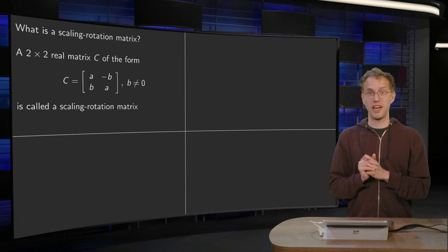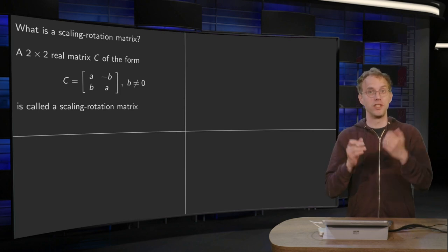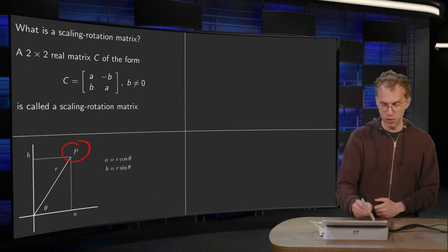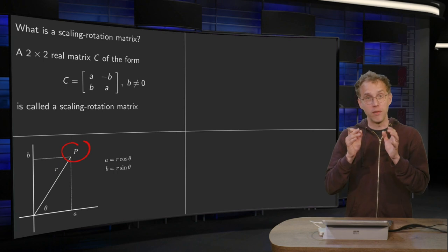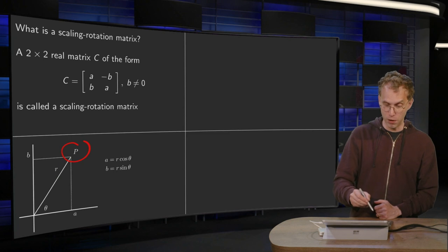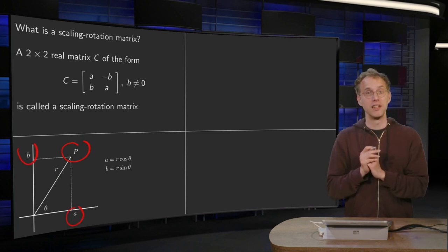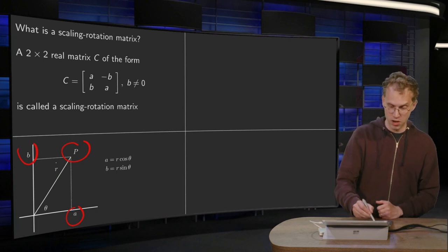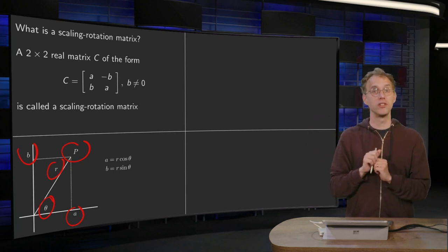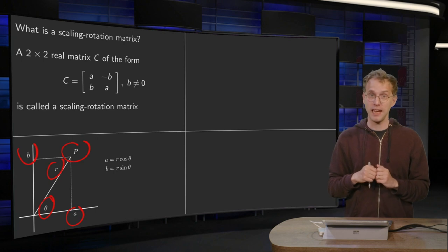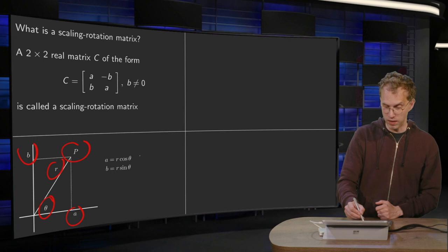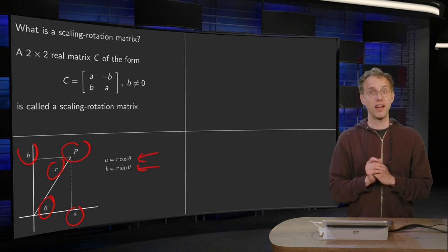So why is this called a scaling-rotation matrix? Well, the matrix is determined by two numbers a and b, and a point in the plane is also determined by two numbers a and b. So let's see what happens if you look at the point P with coordinates a and b. Then it will become clear in a while why this matrix is called a scaling-rotation matrix. So we put the point P in the plane with coordinates a and b, and then we can describe P also in terms of its polar coordinates r and θ, where r is the distance to the origin and θ is the angle with the positive x-axis. You know how to convert these: we then have a equals r cosine θ and b equals r sine θ. But what does this have to do with matrices?